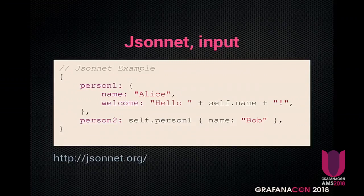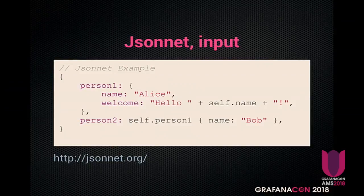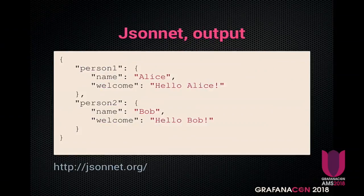So what does JSONNET look like? It looks like JSON — you have variables, you have a bunch of stuff. When you look at that code: person one, Alice, greeting is 'hello, self.name'. And person two, whose name is Bob. That produces JSON like this: 'hello Alice', 'hello Bob'. That's the output of the first example.